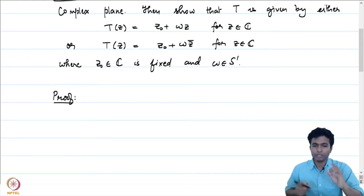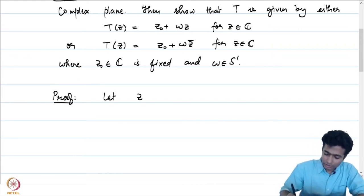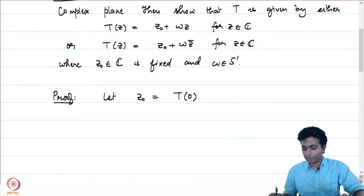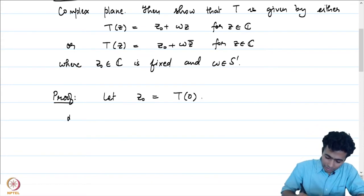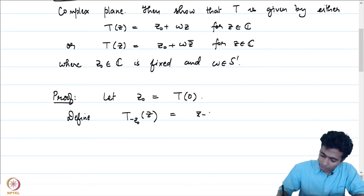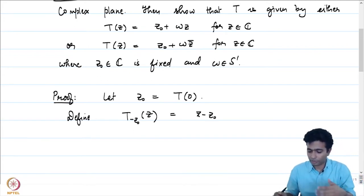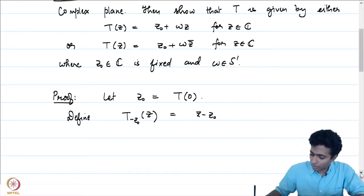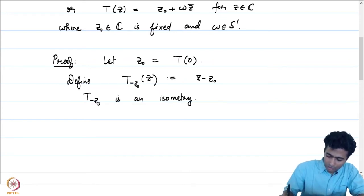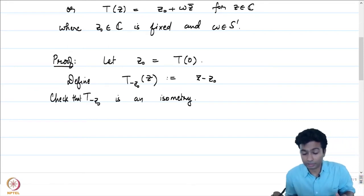Let us give a proof of this statement. The first observation is: if we look at z₀, the fixed point given by T(0), and define the map T_{-z₀}(z) = z − z₀ — this is a translation by −z₀, adding −z₀ to z — then T_{-z₀} is an isometry. I will leave that as a check for you; it is quite straightforward.